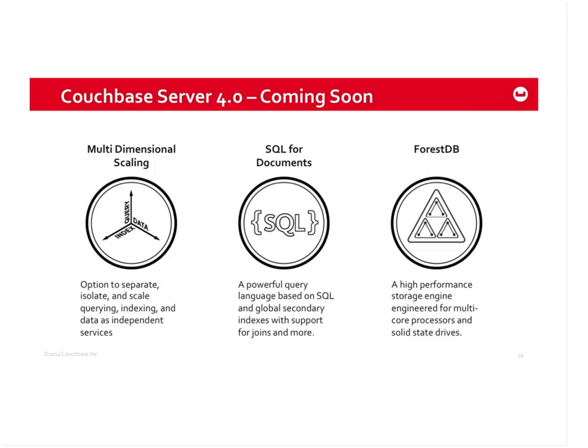Of the three major features in 4.0, multidimensional scaling is most applicable from an operational standpoint. We've pulled the three main database services — reading and writing data, indexing data, and querying data — into independent services. When you deploy a cluster, you can specify which services run on which servers. SQL for Documents is a query language based on SQL but for JSON documents. And ForestDB is a new high-performance storage engine engineered specifically for multi-core processors and SSDs, which will be used to store indexes.